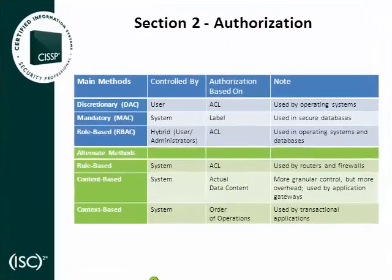Section 2: Authorization. Once a user has been authenticated by the system, each access attempt within that system must be authorized. The CBK requires that a candidate have in-depth knowledge of the following three: one, discretionary access control, DAC; two, mandatory access control, MAC; and three, role-based access control, RBAC. DAC is a user-directed access control where the owner of the resource controls which other users are allowed access and what types of access. DAC stores access permissions in access control lists, more commonly known as ACLs, which are attached to the resources. DAC is a decentralized approach to authorization.